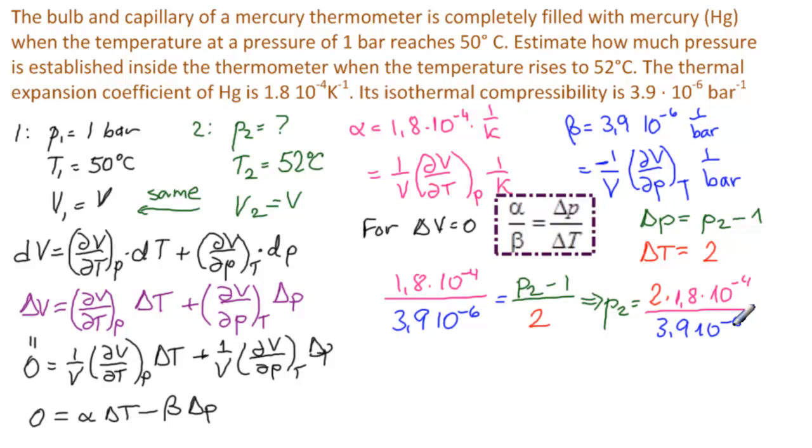So P2 equals 2 times 1.8 times 10 to the minus 4 divided by 3.9, 10 to the minus 6. That's that. And then we just add that 1 plus 1. Get our calculator out.